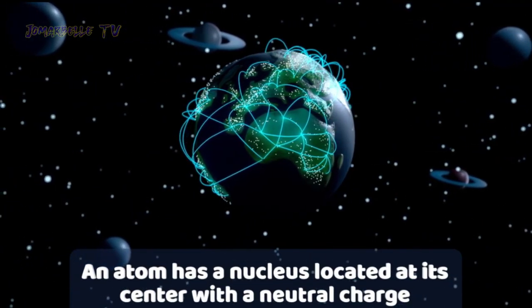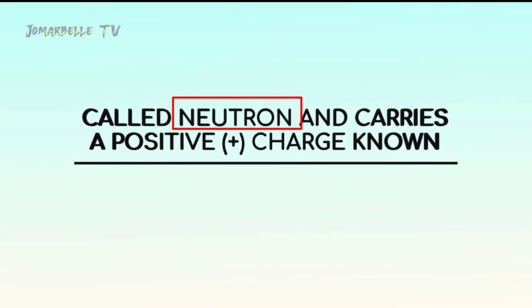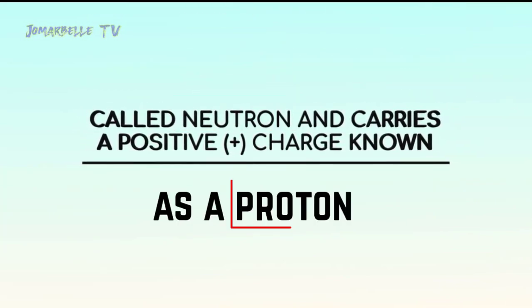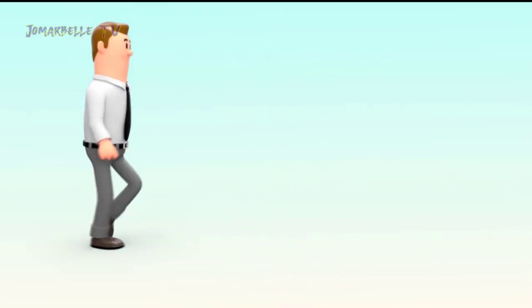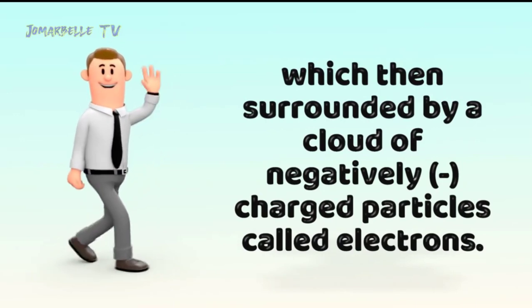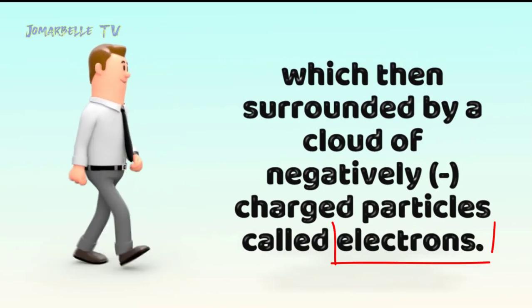An atom has a nucleus located at its center with a neutral charge called neutron and carries a positive charge known as proton, which when surrounded by a cloud of negatively charged particles called electrons.